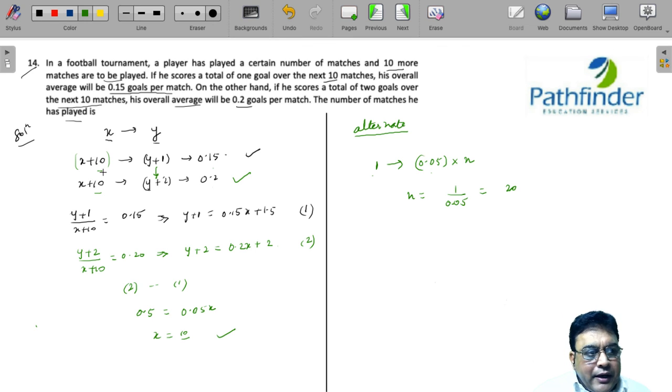But 20 includes the last 10 matches, so the initial number of matches is 10. Now this is a far superior approach to solving the two equations, but for this you have to understand the concept of deviation very well.